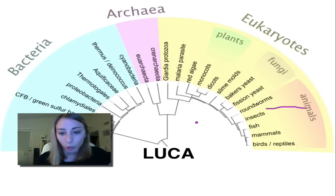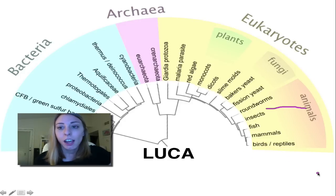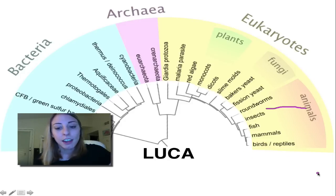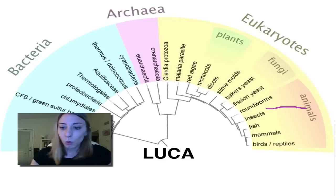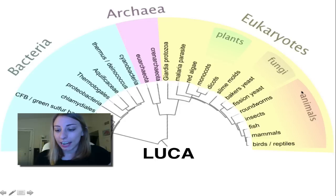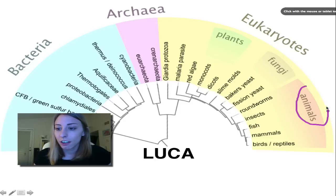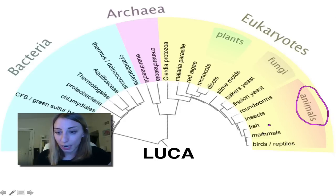So let's talk a little bit more about the history. LUCA existed, as we said, 3.5 to 3.8 billion years ago. We can see here that animals exist right here. We, of course, are animals — we are mammals.